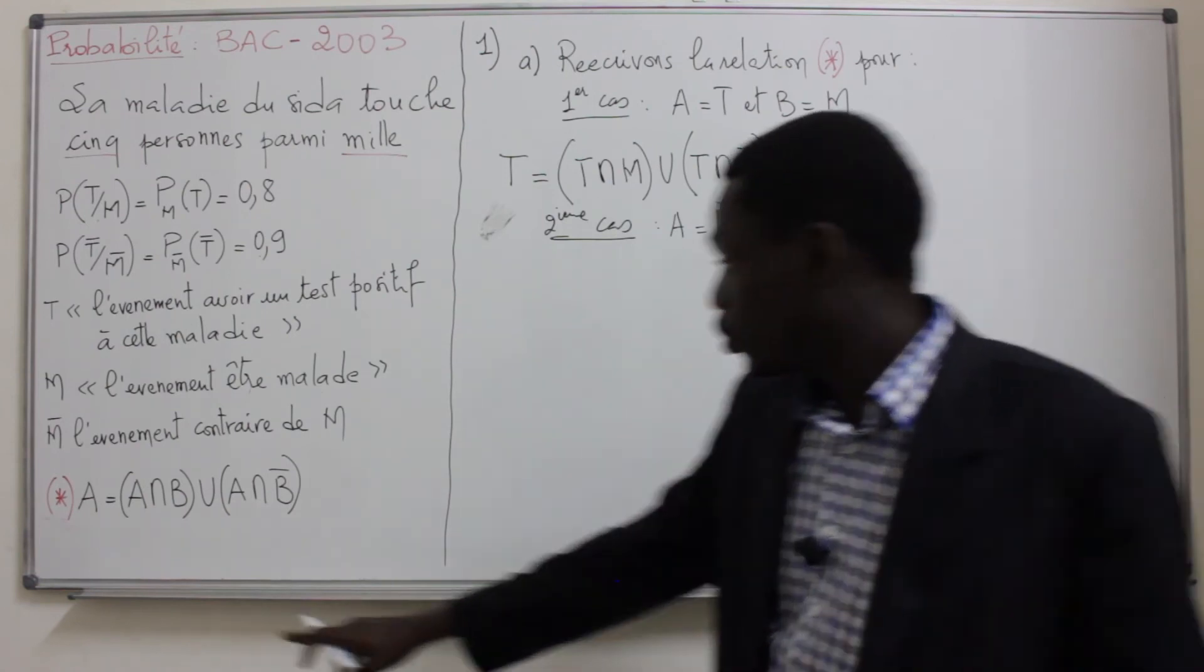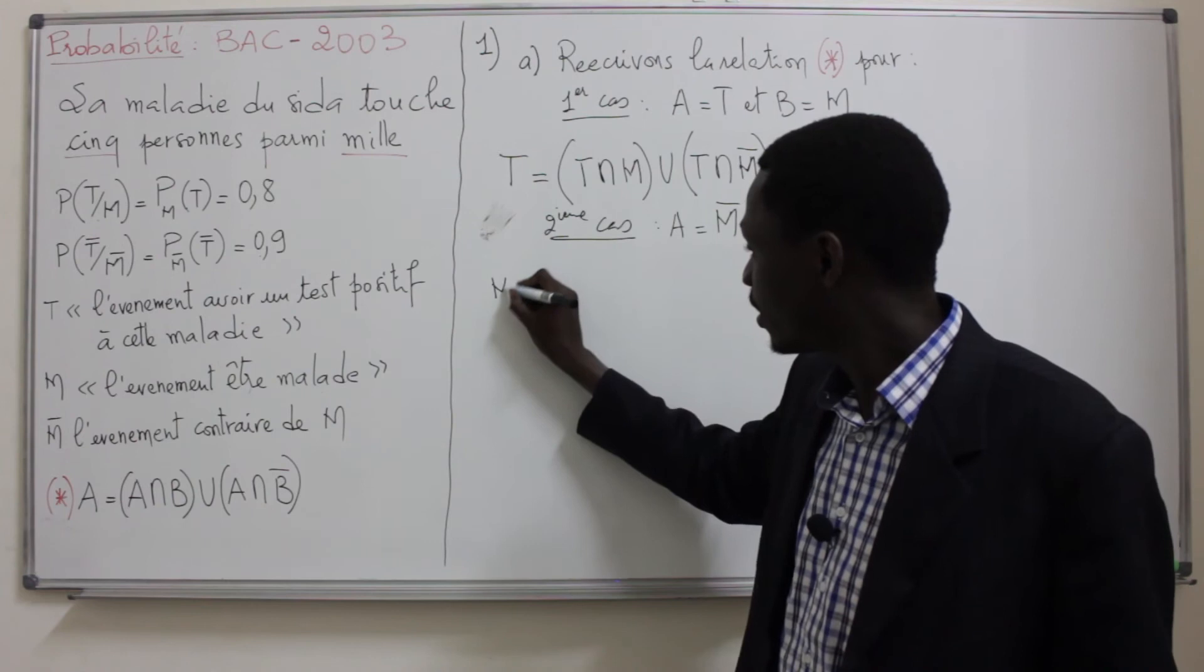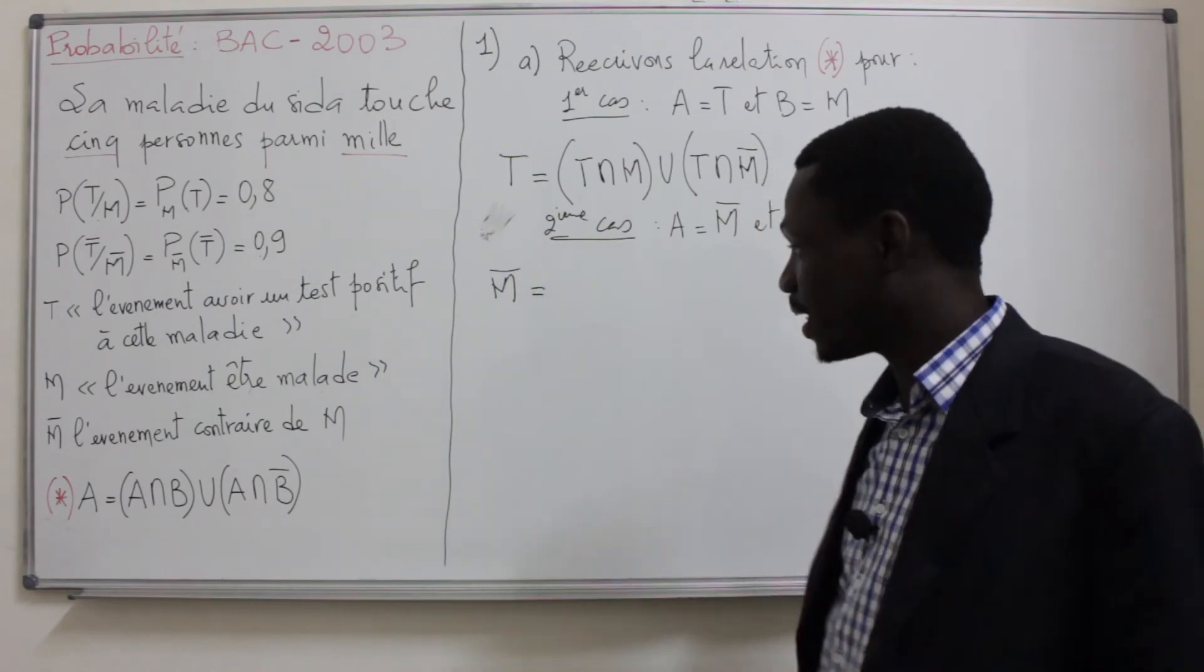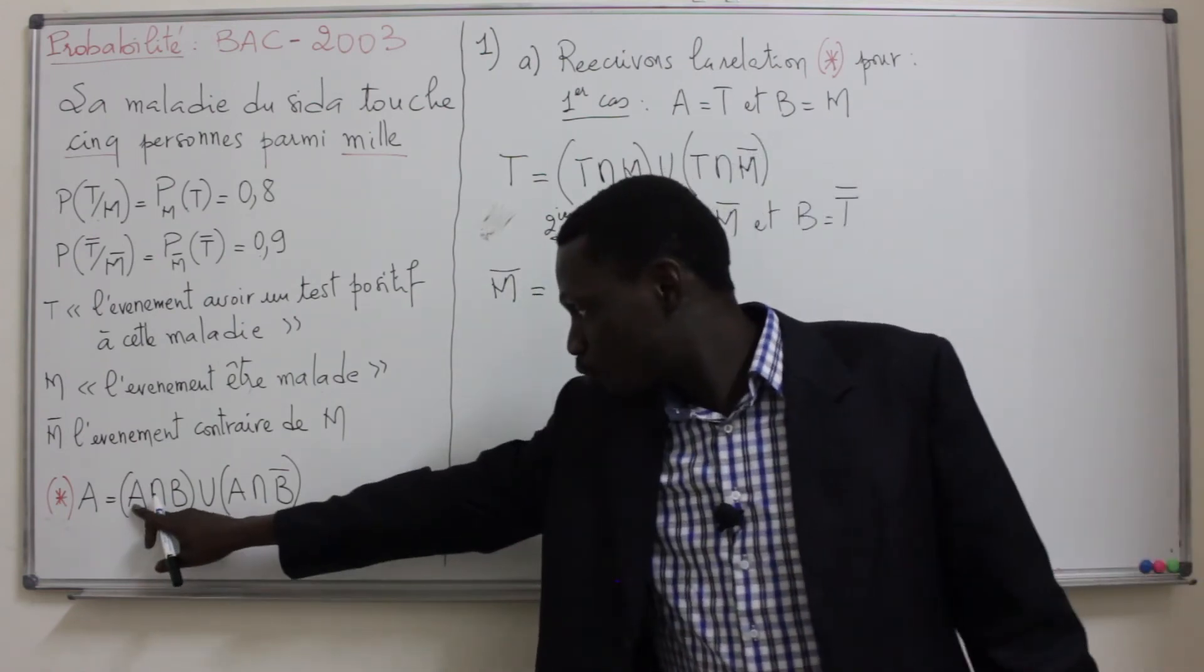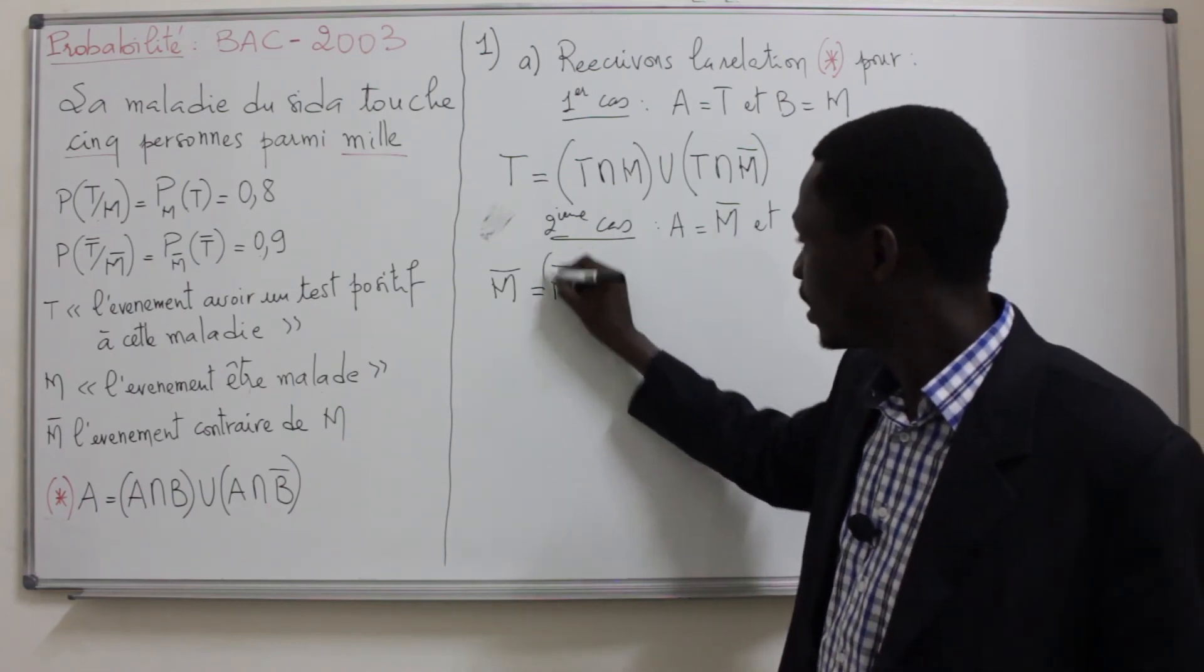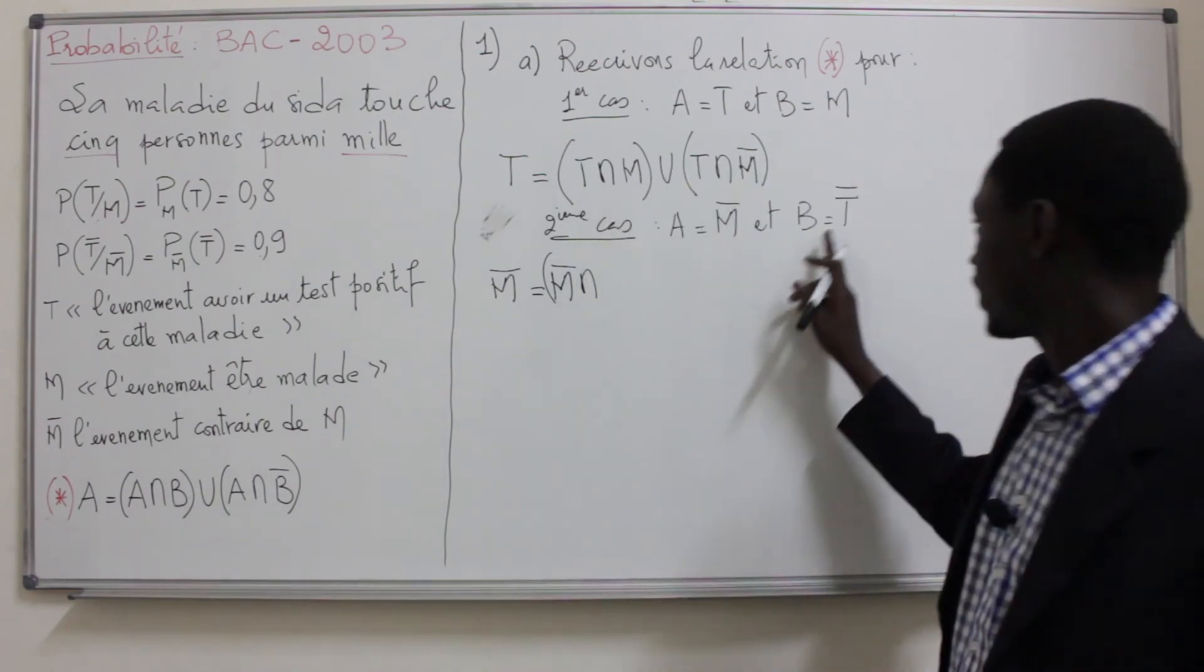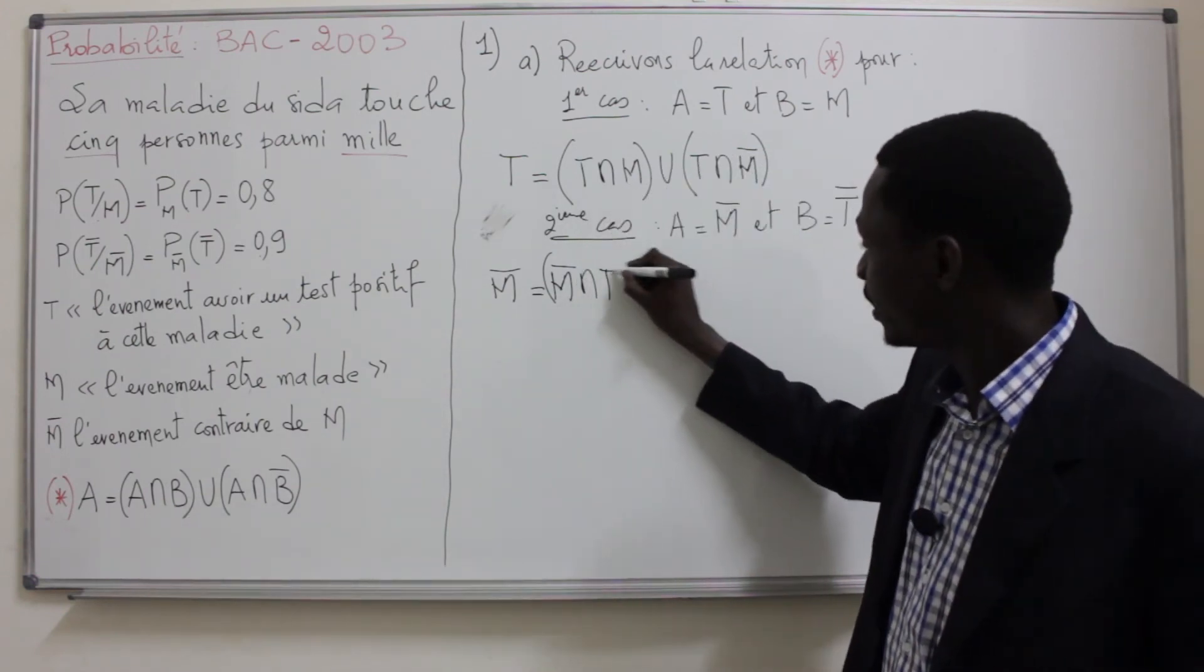Reprenons la relation. Le A, on le remplace par M̄. Donc on aura M̄ = M̄ inter T̄